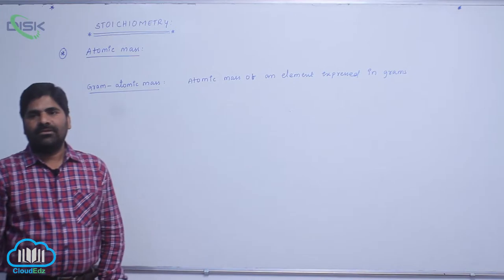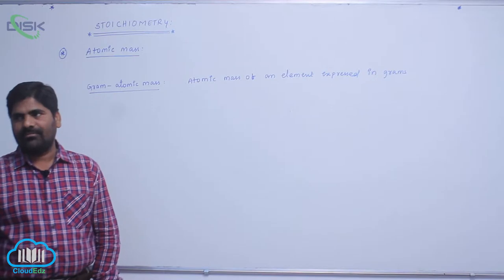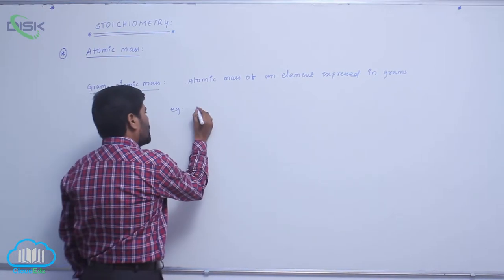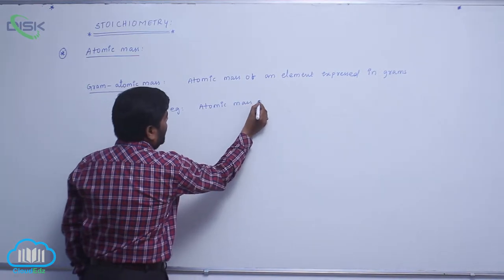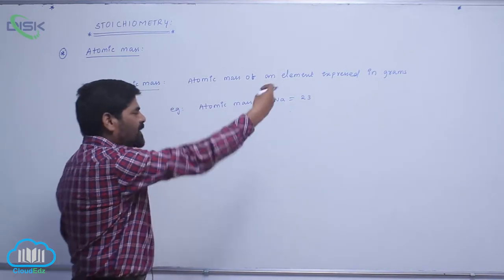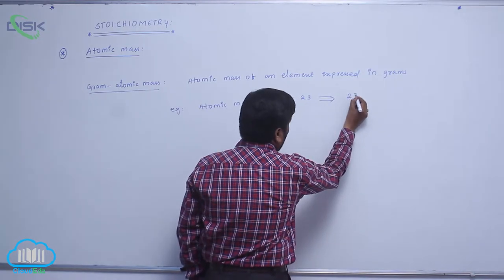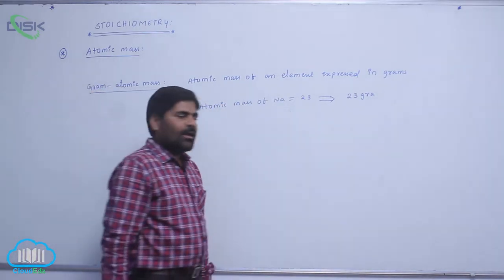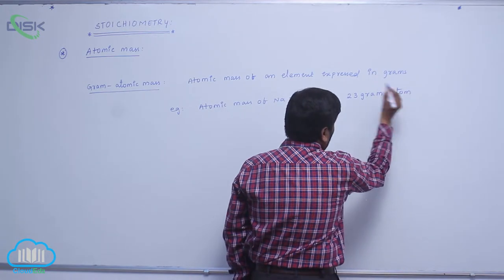For example, the atomic mass of sodium is 23. When it is expressed in grams, it is known as 23 gram atoms.